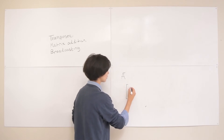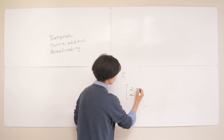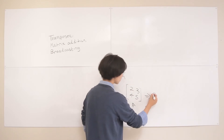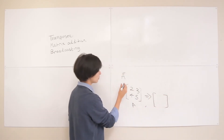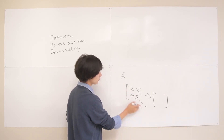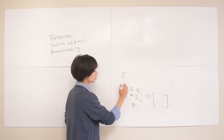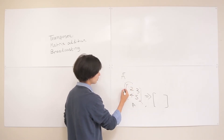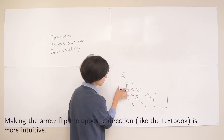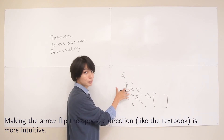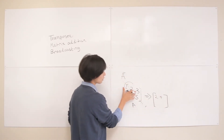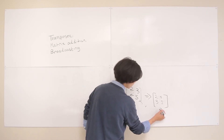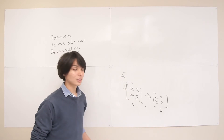Say A originally looks like [2, 3; 4, 5] — a 2 by 2 matrix. Taking the transpose, you can imagine making the main diagonal of the matrix from top-left to bottom-right, and flipping across it. What you end up with is that the first column — 2 and 4 — becomes the first row, and the second column — 3 and 5 — becomes the second row. So that's A transpose.